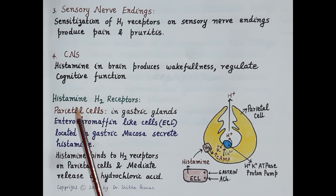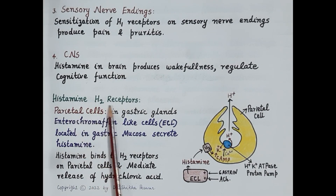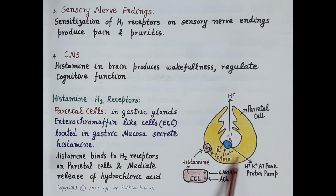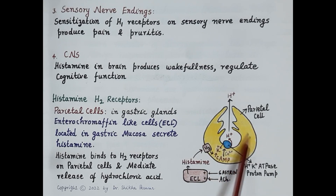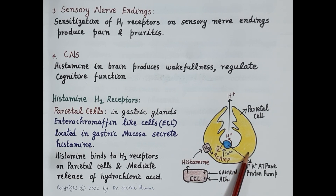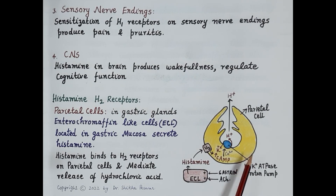Now let's discuss the pharmacology of H2 histamine receptors. Histamine H2 receptors are located on the parietal cells — this figure shows the parietal cell in yellow. H2 receptors are located on parietal cells, and parietal cells produce hydrochloric acid, which is one of the most important components of gastric juice. Parietal cells are present in the gastric glands located in the wall of the stomach.